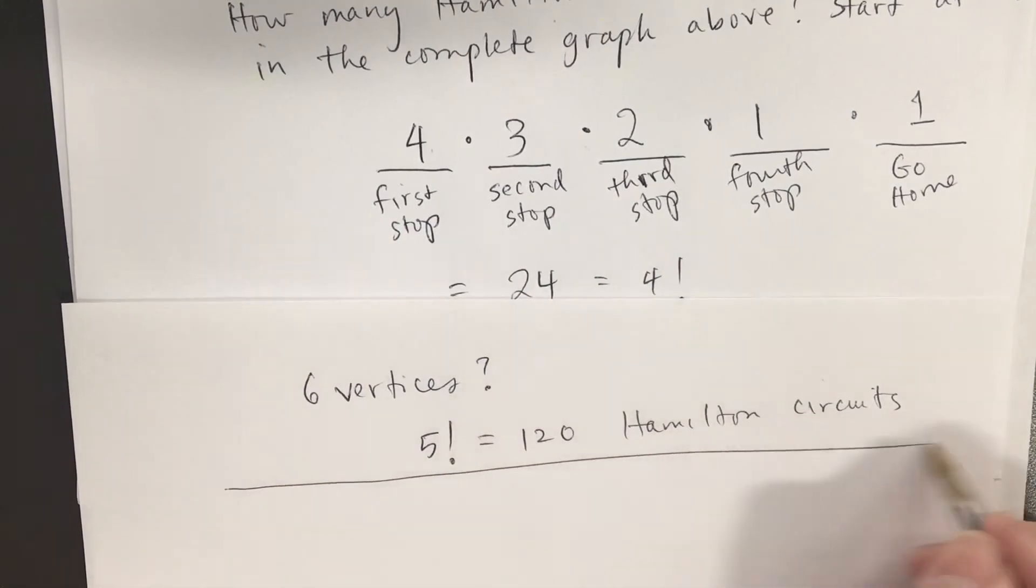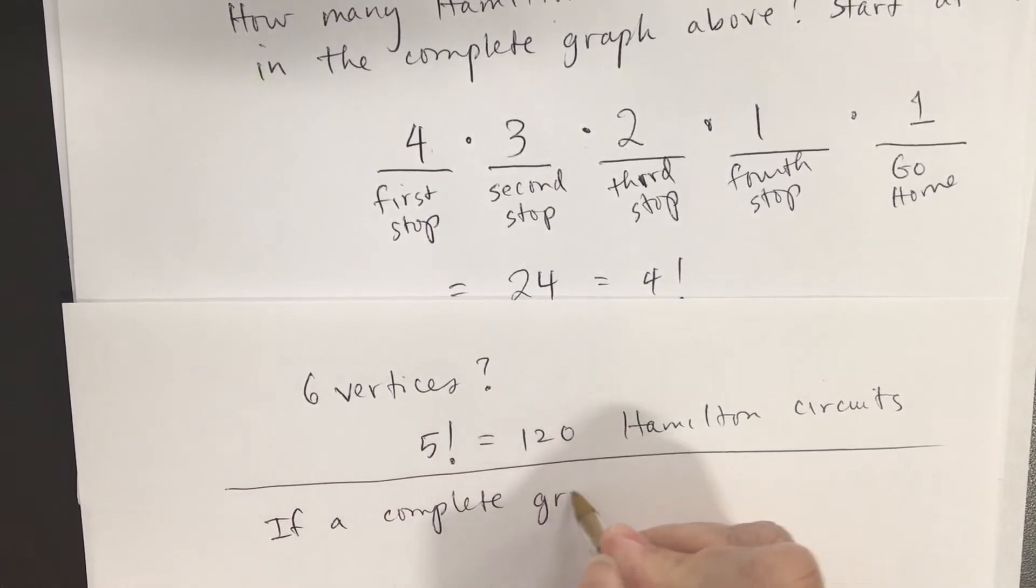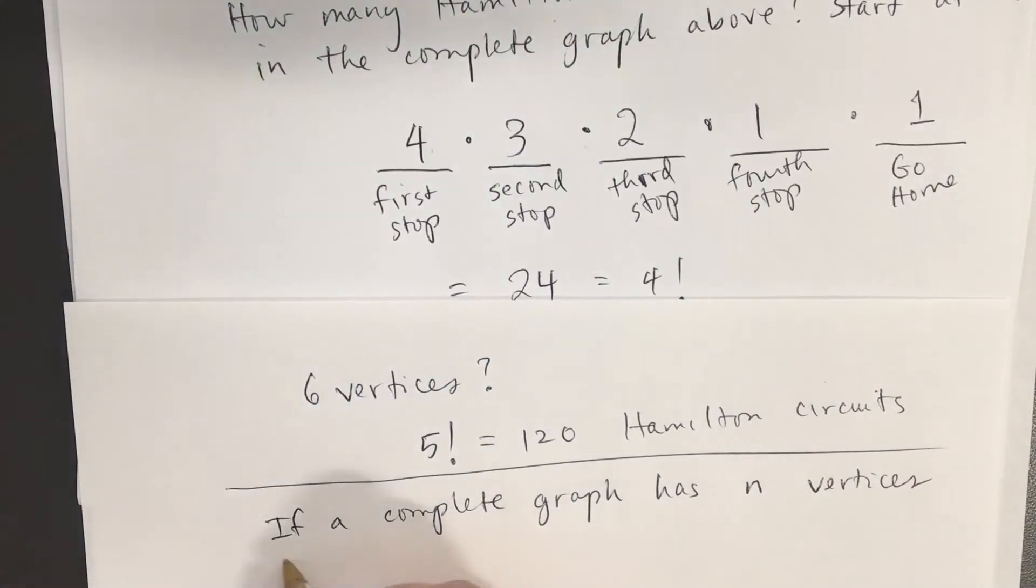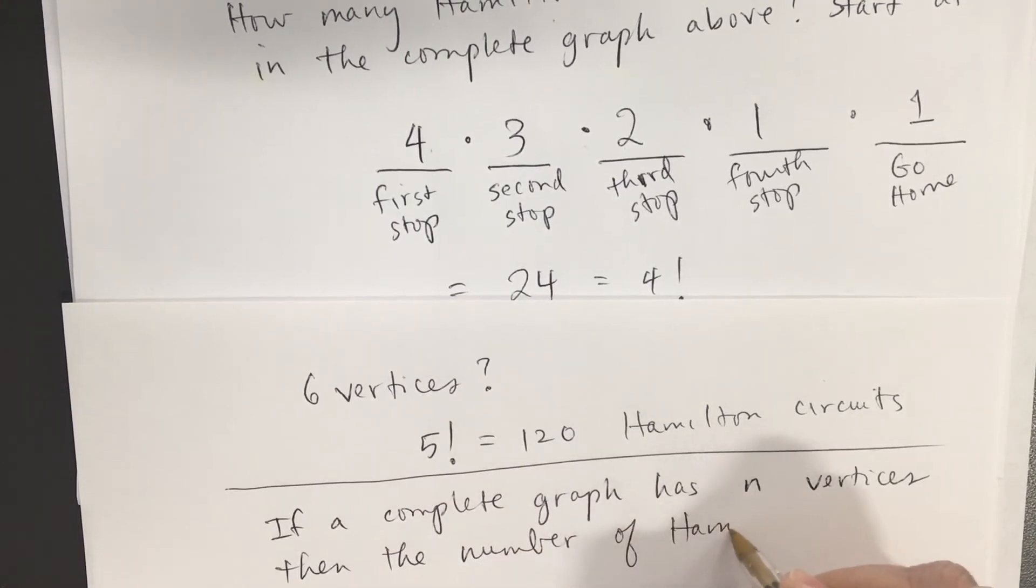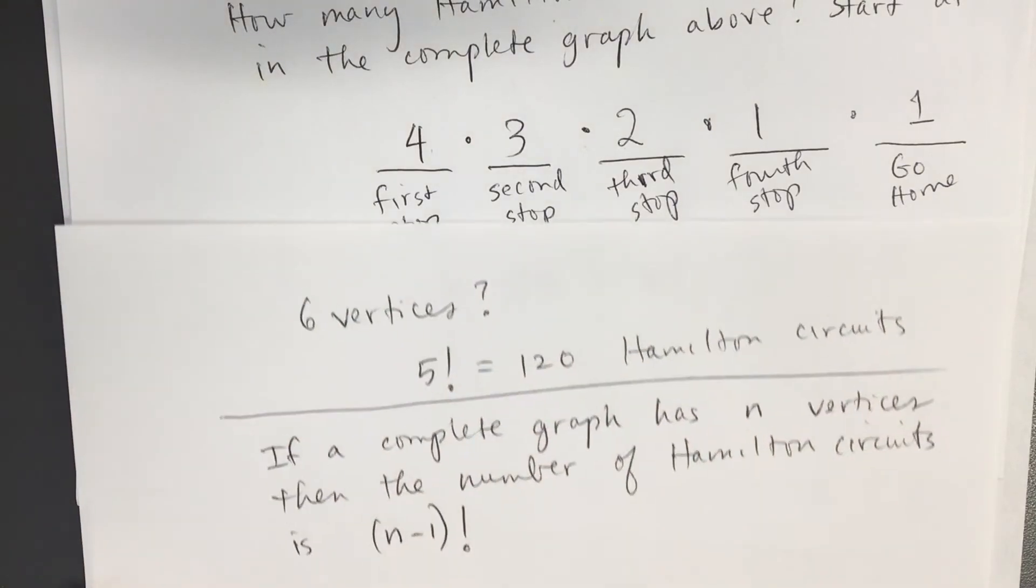Here it is. If a complete graph has n vertices, then the number of Hamilton circuits is (n-1) factorial. n minus 1 is in parentheses.